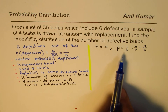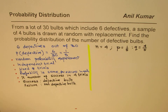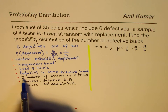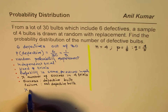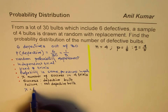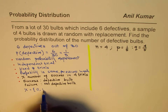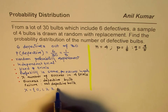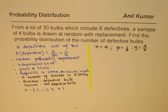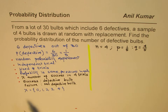Now, when we are talking about 4 bulbs, what could be the values of X, the number of successes? X could be 0, 1, 2, 3, or 4. So these are 5 values which X can take, and we have to find the probability of each.